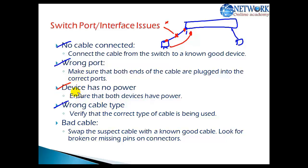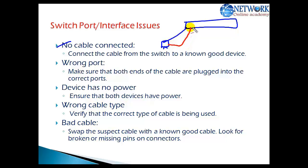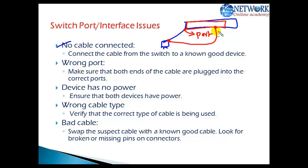Make sure both ends are properly connected. The device may not have power, or it can be a wrong cable type. If you suspect a cable problem, the alternative is to replace it with another cable — if it works, you can confirm the original cable was faulty. Make sure both devices are powered on and both ends have proper connectivity. If you suspect a port issue, try connecting to an alternate unused port, making sure they are on the same VLAN. If it works, you can confirm there was a problem with the original port.